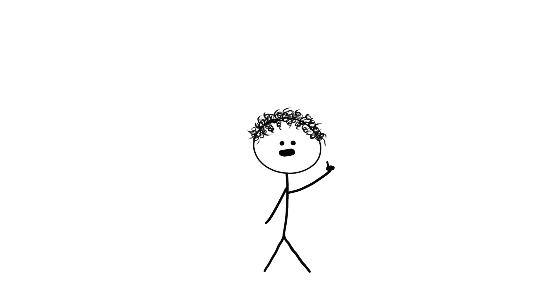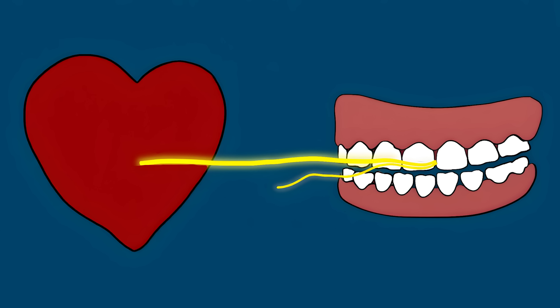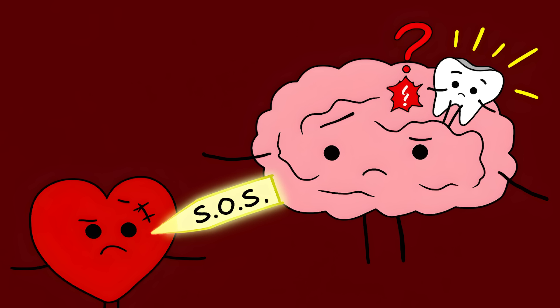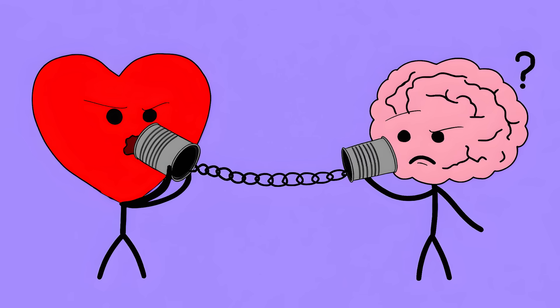But that moving tooth pain could actually be your heart trying to tell you something's wrong. Your body's wiring is kind of weird. The same nerves that sense pain in your heart also connect to your jaw and teeth. So when your heart's in trouble, it sometimes sends out an SOS signal that your brain misreads as tooth pain. It's like your heart's playing a game of telephone with your brain, but the message gets scrambled along the way.